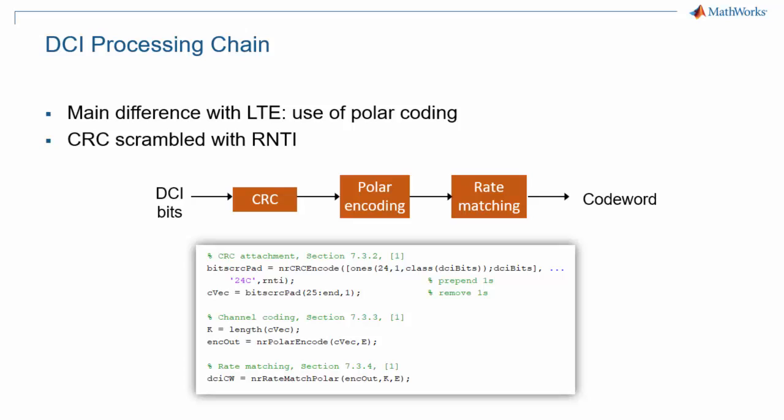Downlink control information uses polar code for error protection. This is the main difference with encoding in LTE, where tail-biting convolutional encoding was used. Another difference with LTE is that the CRC used here is longer, at 24 bits, instead of 16 for LTE. The CRC value is scrambled with a UE identifier, called the Radio Network Temporary Identifier, or RNTI, in order to indicate which UE the message is intended for.